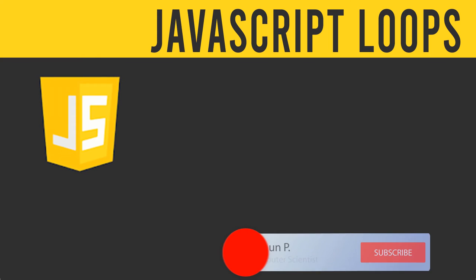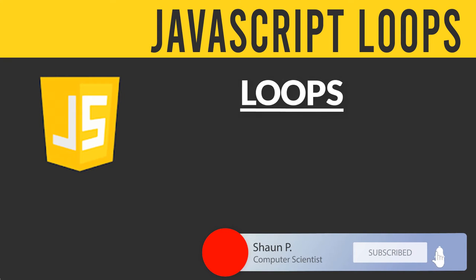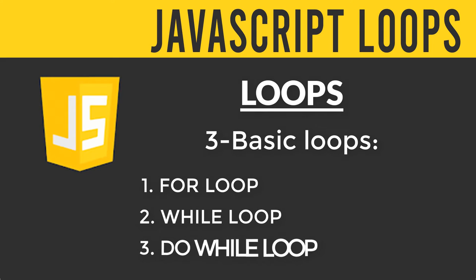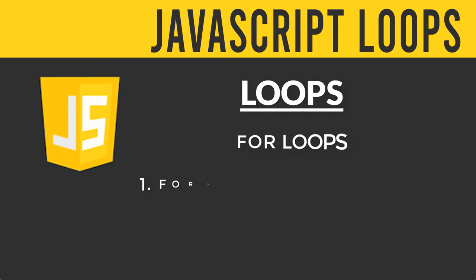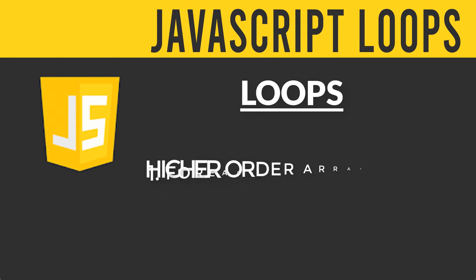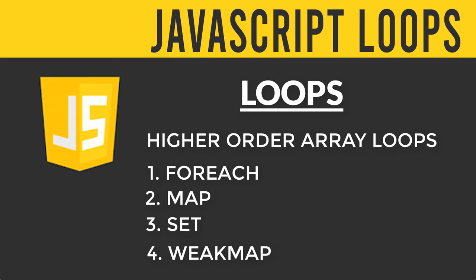Today we're going to start talking about loops in JavaScript. JavaScript offers all kinds of different ways to iterate through different data sets, but the three basic types you need to be aware of are the for loop, the while loop, and the do-while loop. There are several different variations of the for loop, such as the for-in and for-of methods, which are more specific towards objects and arrays. Then we have conditional loops and higher-order array loops — tools like map, weak map set, and for-each.